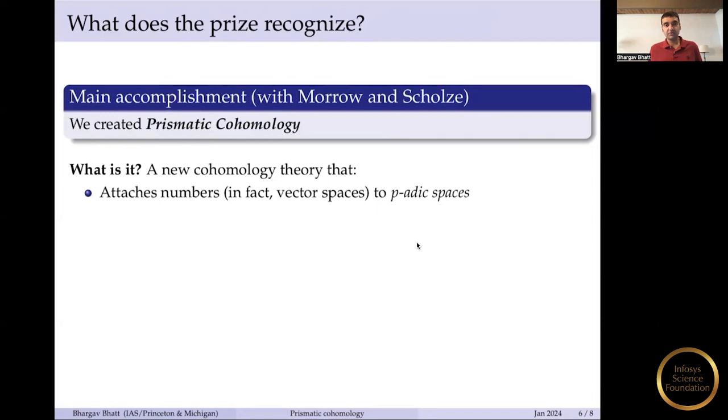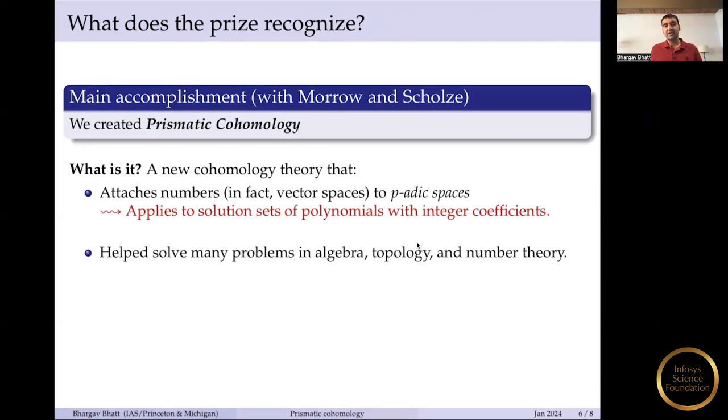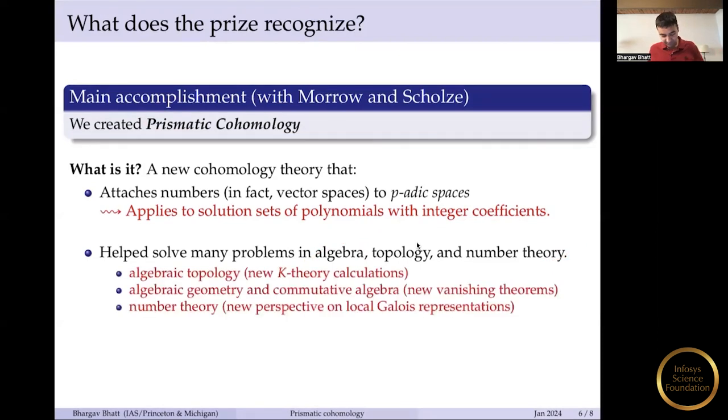One thing you might be worried about is if you sort of move to this exotic world of p-adic spaces, you might lose the ones you care about, but actually you don't. So solution sets of polynomials with integer coefficients are naturally p-adic spaces as well. So the spaces I care about are still in the mix. What is it good for? Well, these p-adic spaces arise naturally in various parts of math, as I've listed over here, in algebra, topology, and number theory. And so each time you meet a p-adic space, now you have a new tool, which is prismatic cohomology. And you might hope that the tool will say something new about the space. And that's, in fact, what happens in these examples. And so there are several theorems in these subjects that were inaccessible before, but are now provable thanks to this new theory.